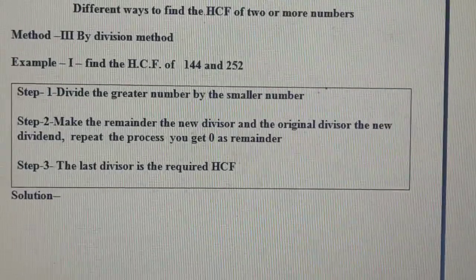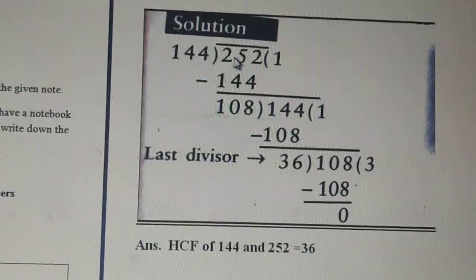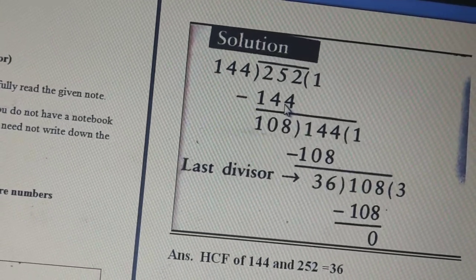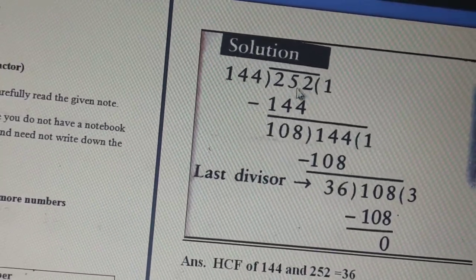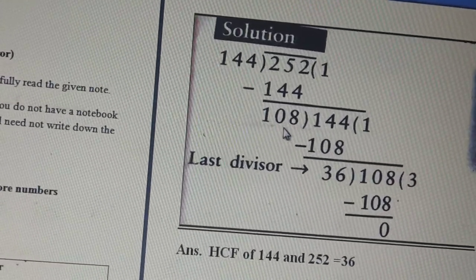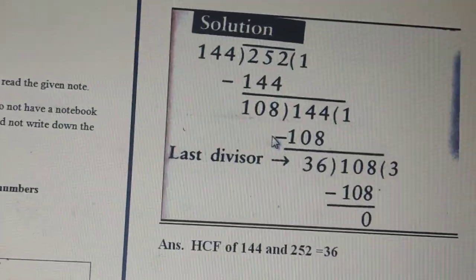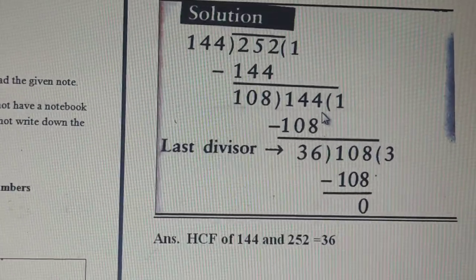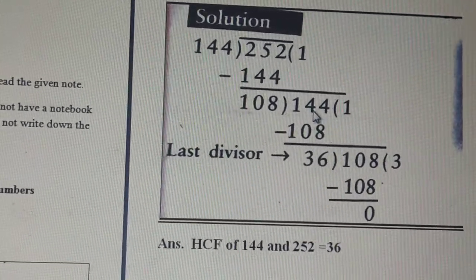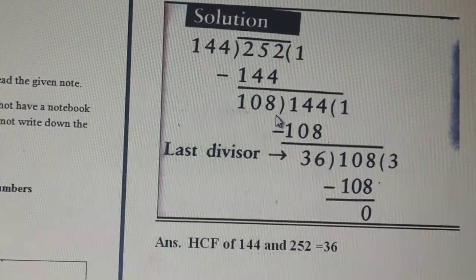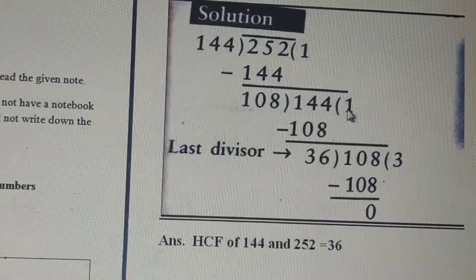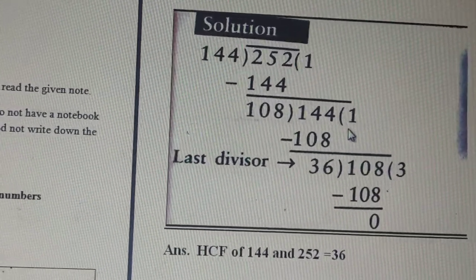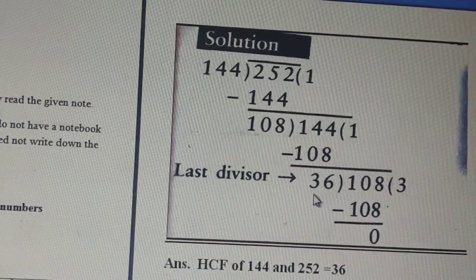We divide 252 by 144. 144 ones are 144. Subtracting 144 from 252, we get a remainder of 108. Now, this remainder will become the new divisor, and the previous divisor 144 will become the new dividend. So 144 is now the dividend and 108 is the divisor. 1 × 108 = 108. So 144 minus 108 gives a remainder of 36.